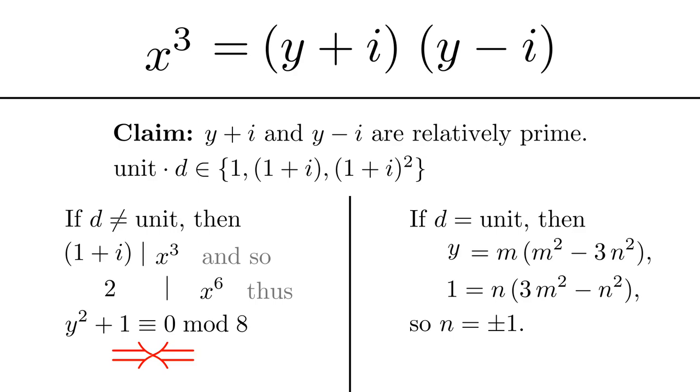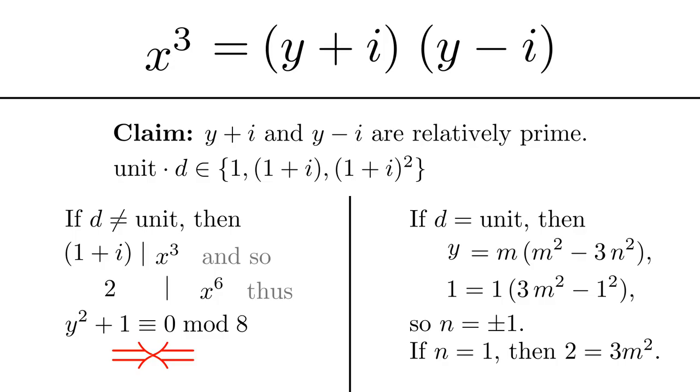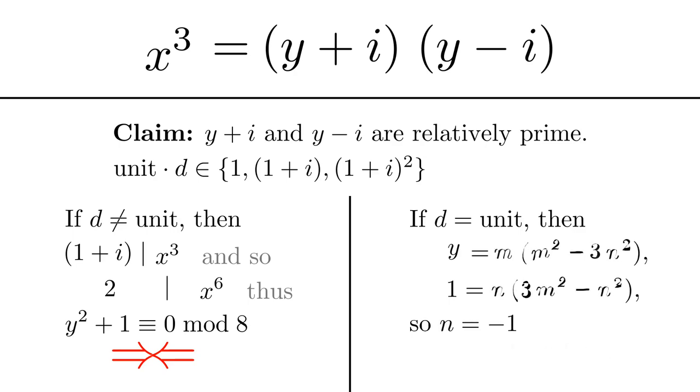So n is either -1 or positive 1. If n is positive 1, then 3m² has to be 2, and that's not possible. 3m² can't be 2. So as a result, n must be -1.